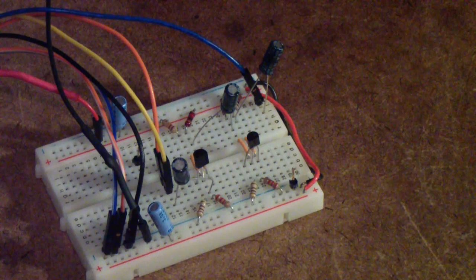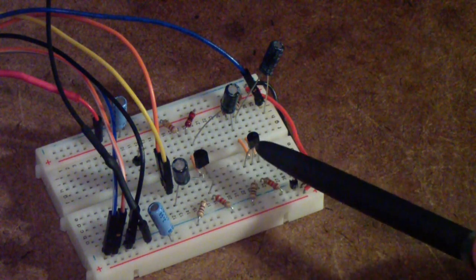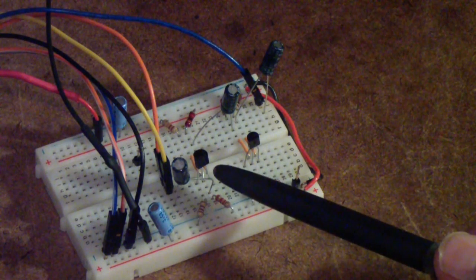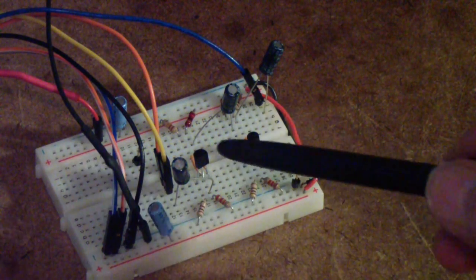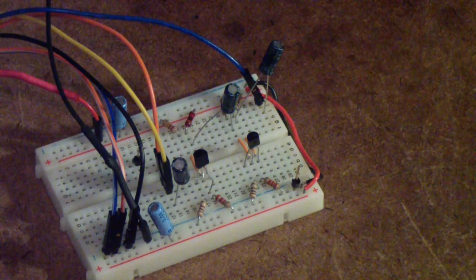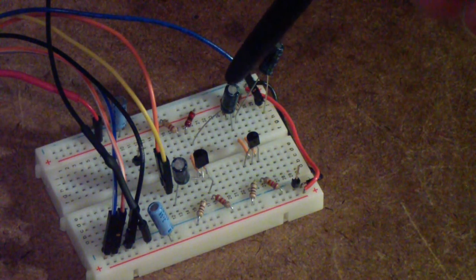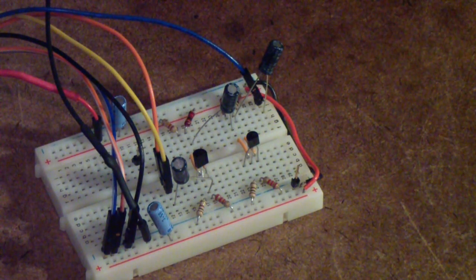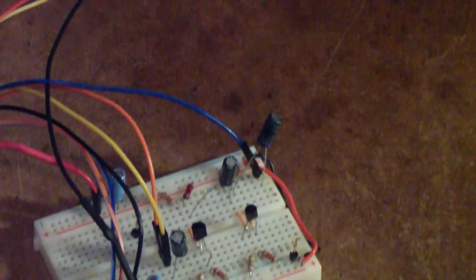I've added another transistor stage. In other words, it's a duplicate of the first stage. And I've coupled the first stage output to the input of the second stage using the same 10 microfarad capacitor. So let's take a look now at the network analyzer.